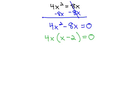It is now factored and equal to 0. We're ready to use the zero product rule. The GCF is one factor, 4x equals 0, and the x minus 2 is another factor.